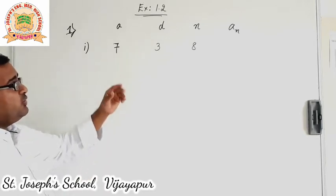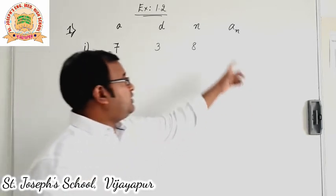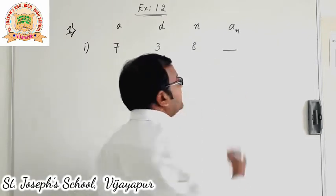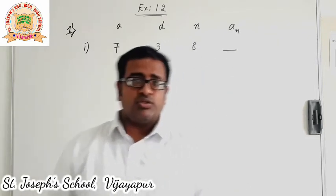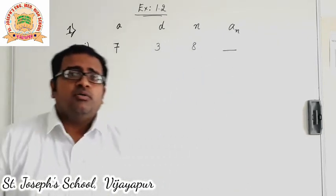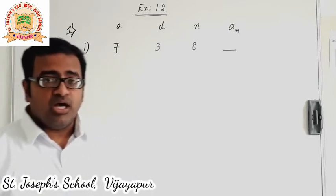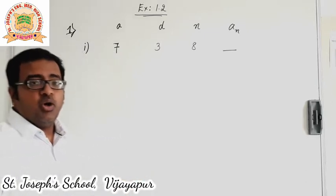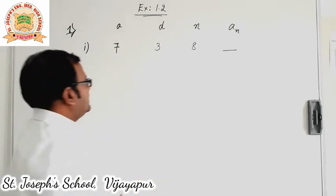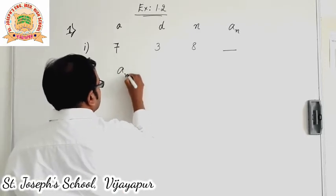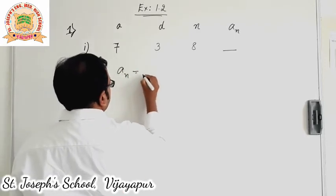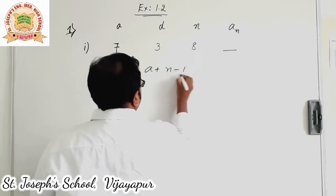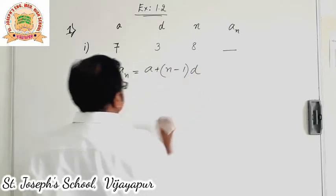We know the a value, d value, and n value. We need to find out an — this is the blank. An is the blank in the first sub question, so we will use the an formula to find out the value of an. Let us start: an is equal to a plus n minus 1 into d.